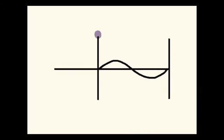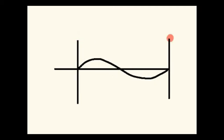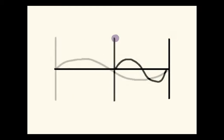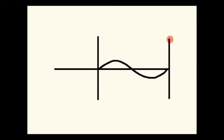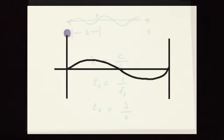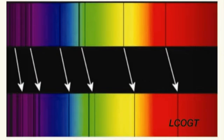When a wave source of fixed frequency is moving towards or away from an observer, there is a change in the observed frequency. This is called the Doppler effect.